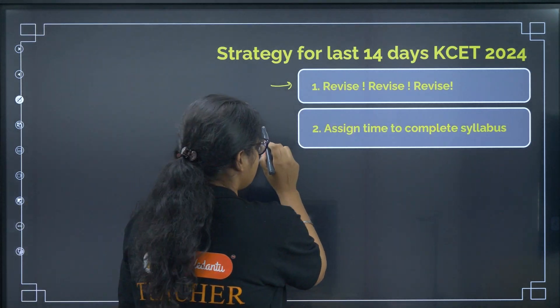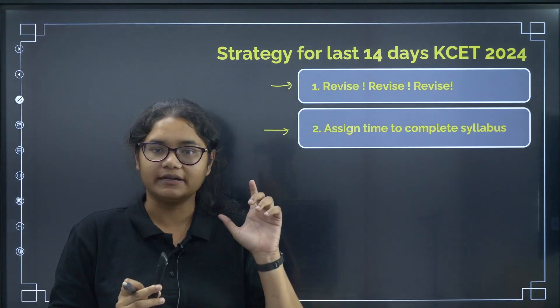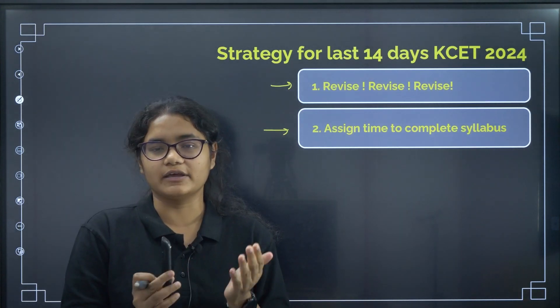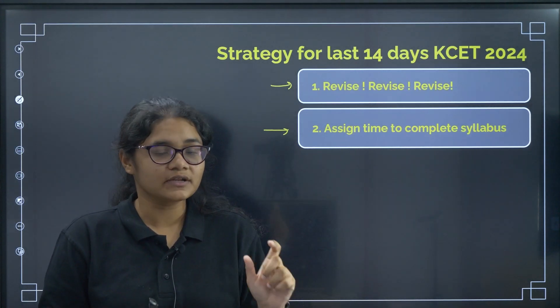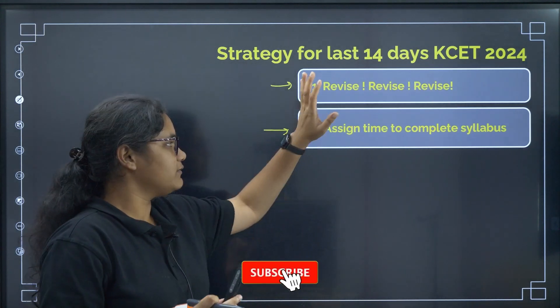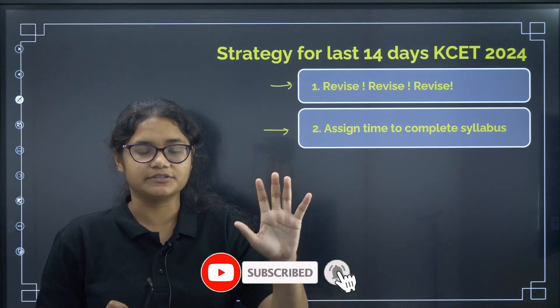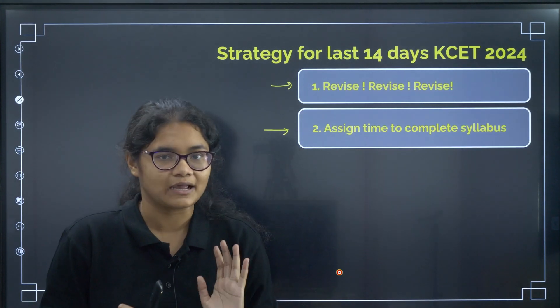Next, assign time to complete the syllabus. So already we have discussed how to complete the high weightage topics but still if you are somewhere some part of any high weightage topic is not completed, use this time first to complete the unfinished chapters. So, you have to give like 70 percent of your time for revision and rest 30 percent of time to complete only if they are high weightage chapters.